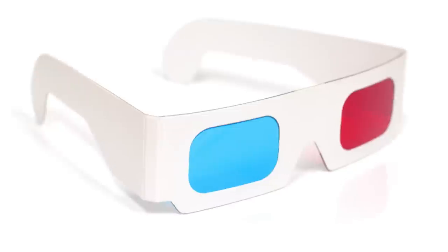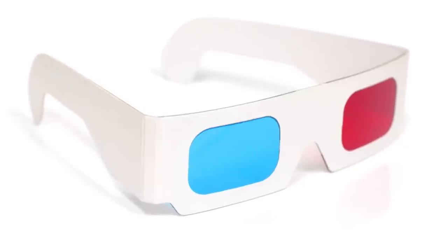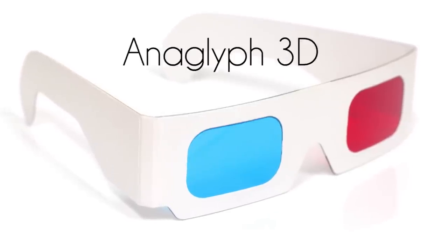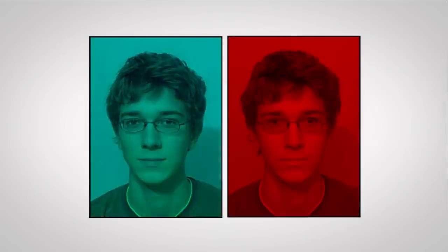How about just putting on a pair of glasses? These red and cyan tinted glasses are used for anaglyph 3D. You've probably seen this before. The two different pictures are converted into red and cyan, and then merged together to create a sort of bluish-reddish image that looks weird until you put on the glasses.